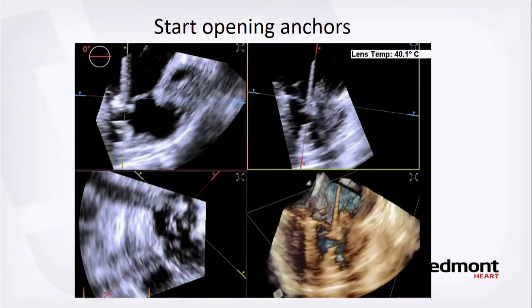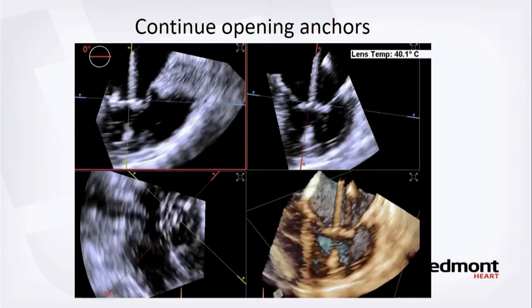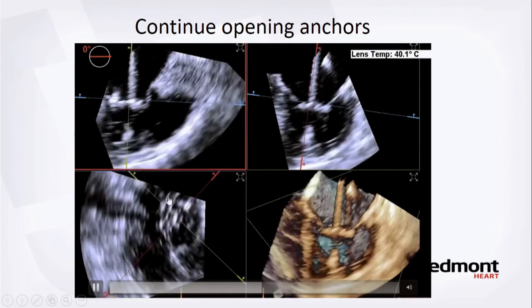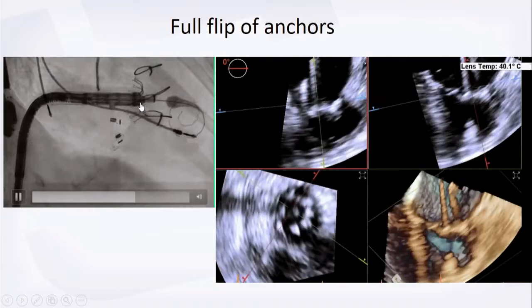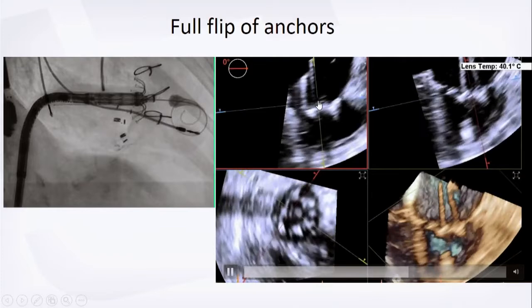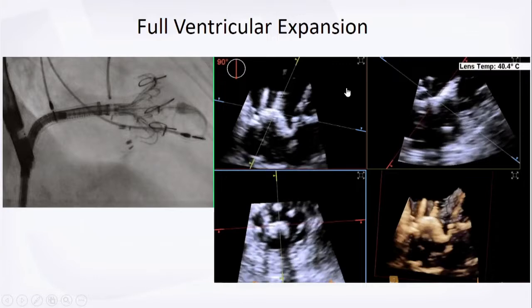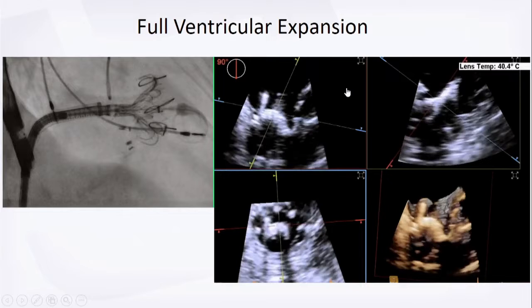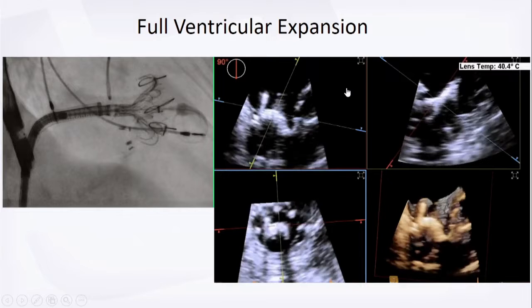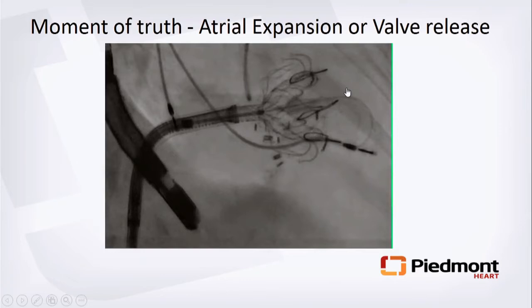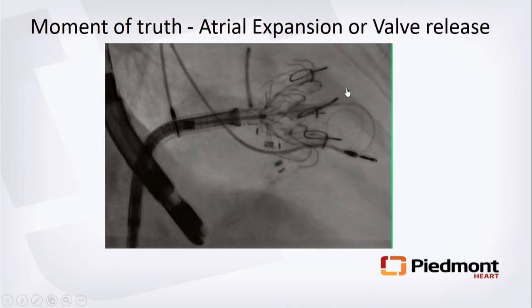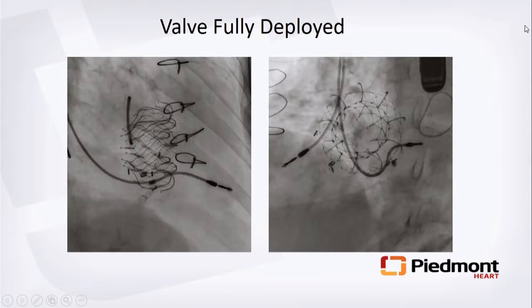Continuously check in different views that the leaflets are above the anchors. This is a heavily TEE-driven procedure — go into MPR images and cut through different anchors in 2D to confirm all leaflets are above the anchors. If it all looks good, continue opening for full ventricular expansion with fully flipped anchors. Then open the atrial side — it is self-expanding nitinol, no pacing required, no hemodynamic collapse, no inflow issues. A very calm procedure.